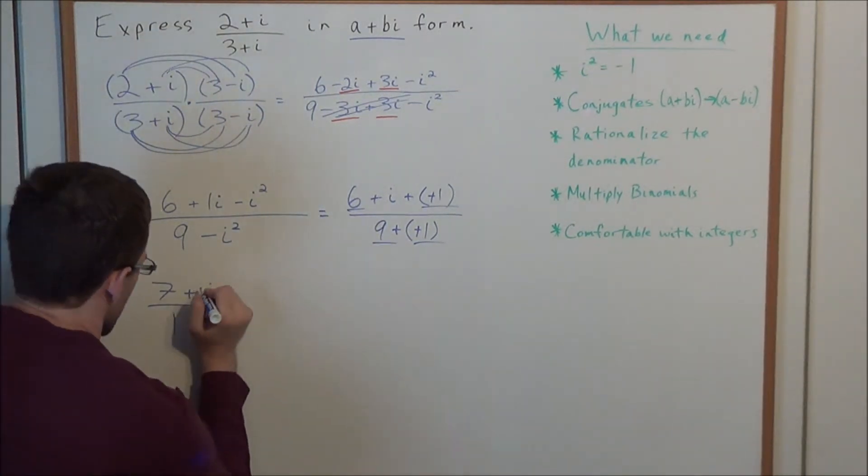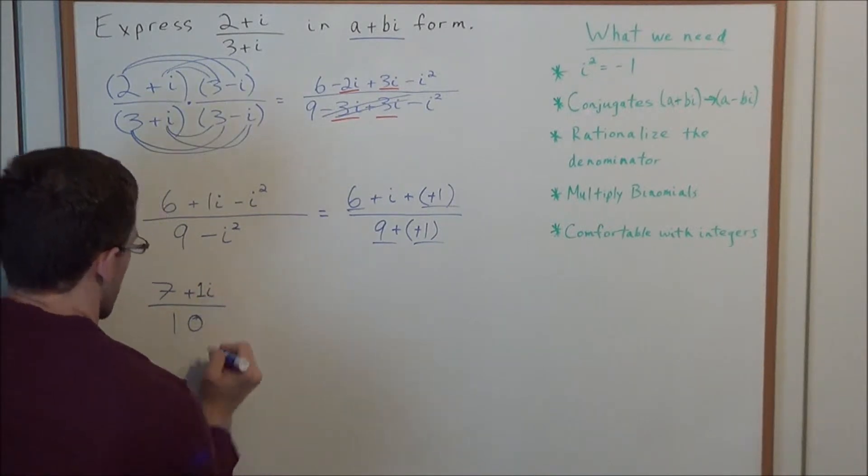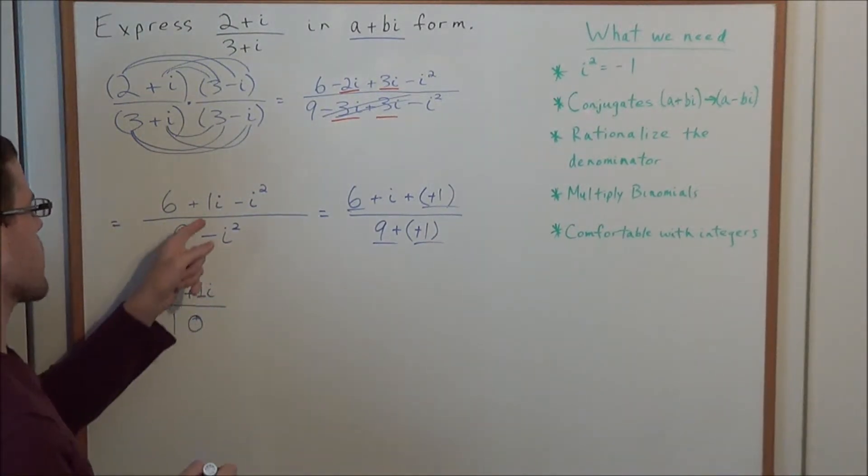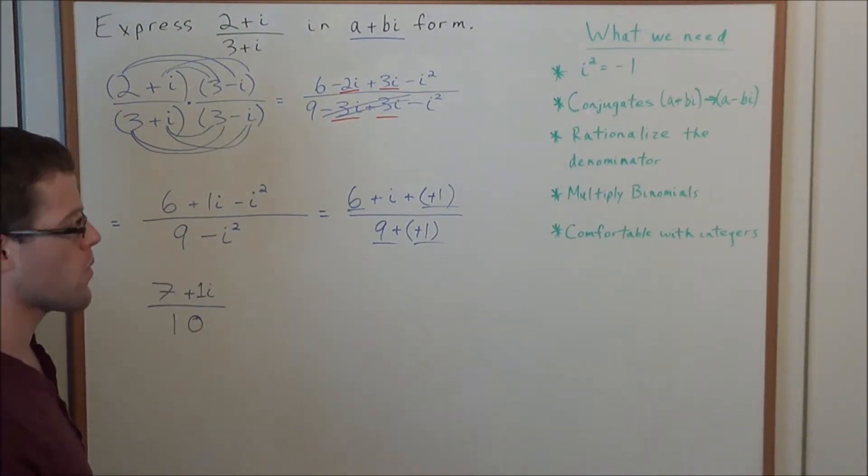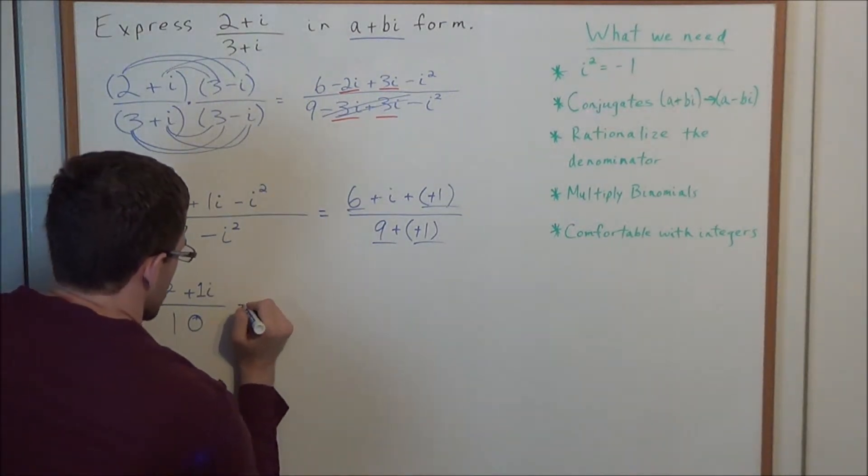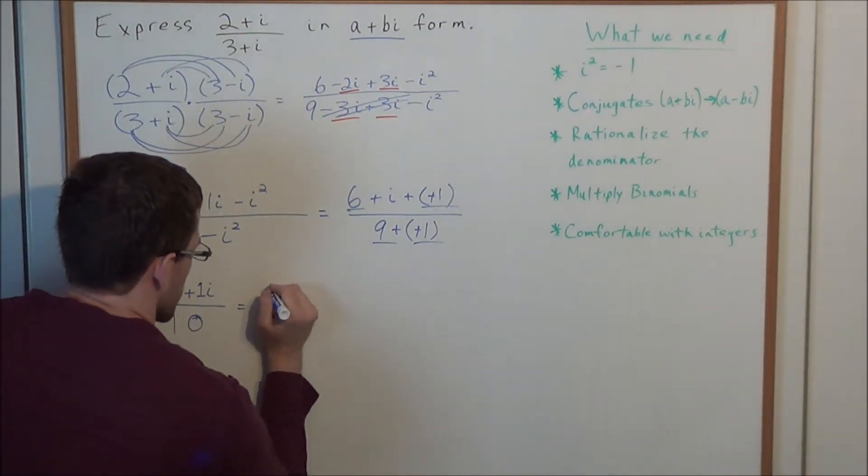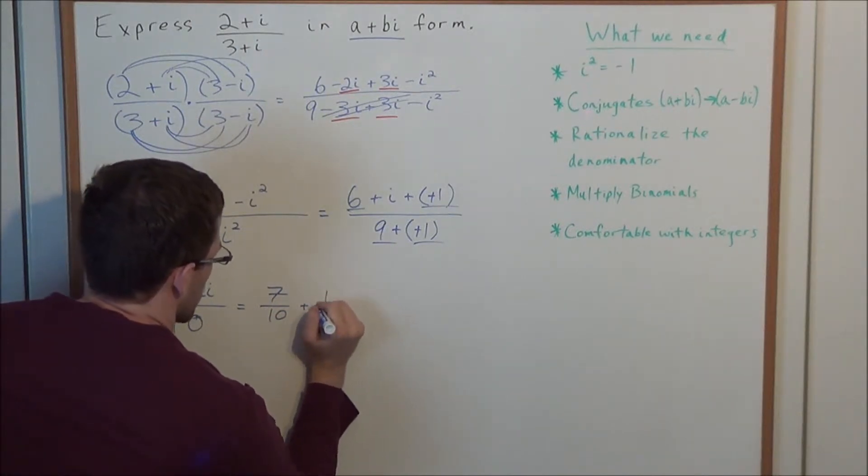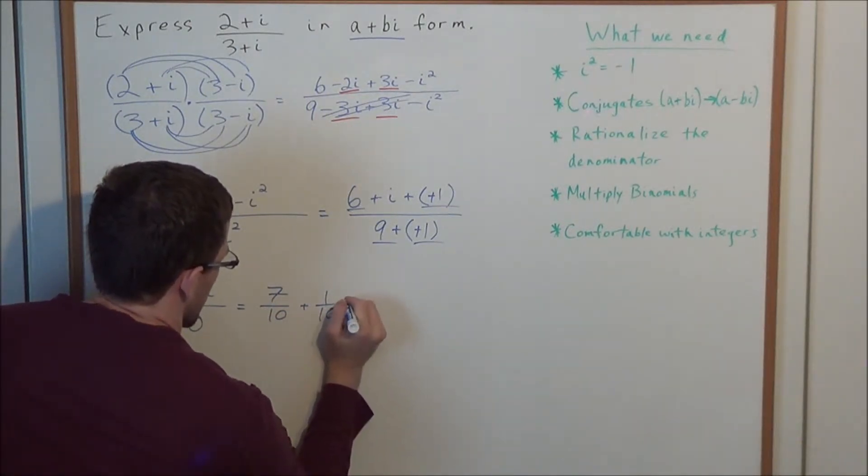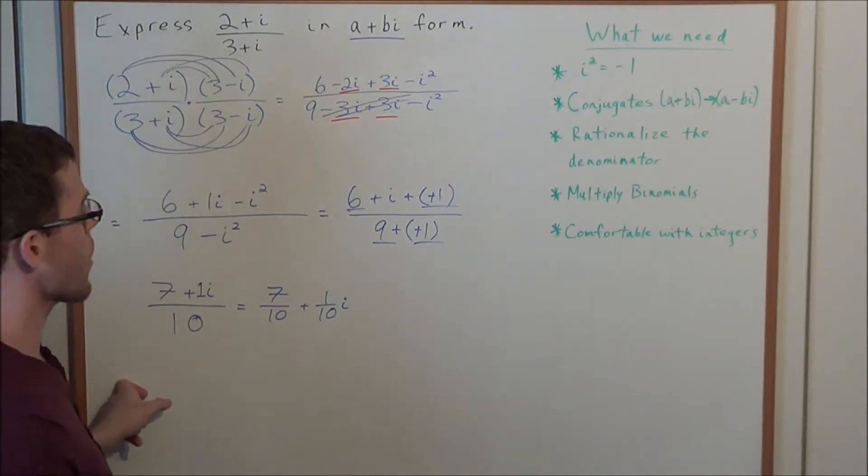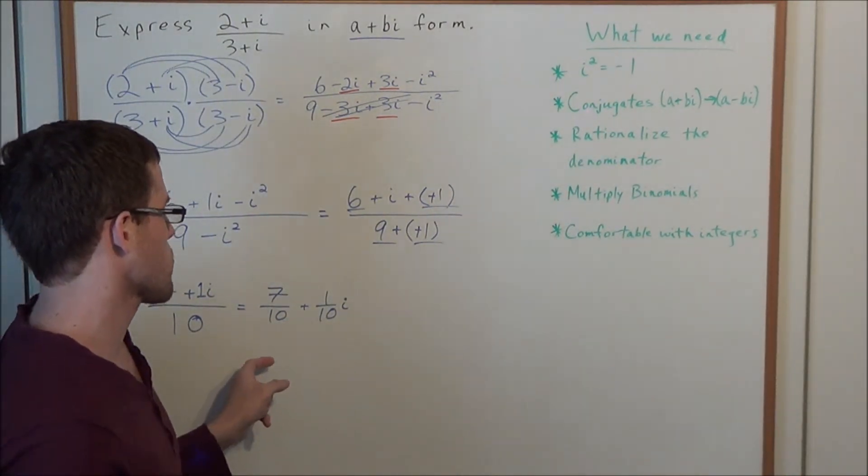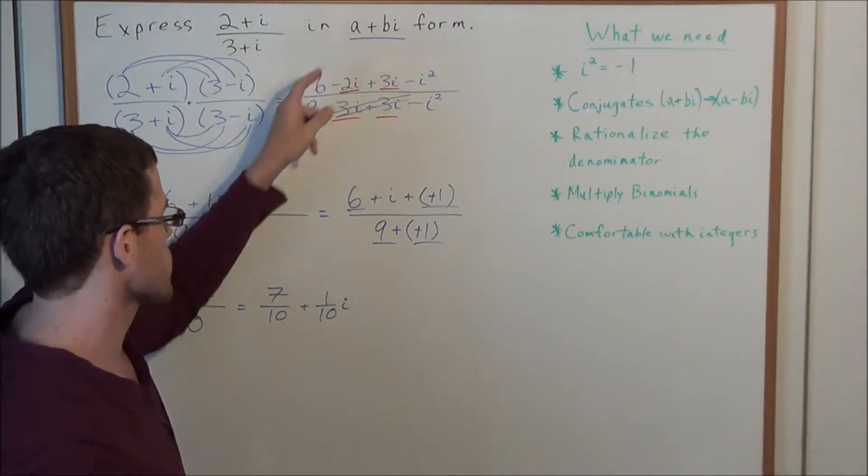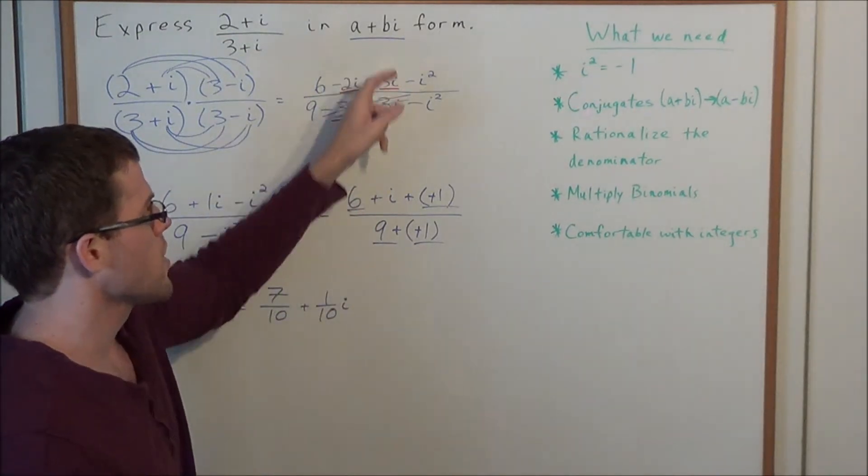But in order to do so, let's go ahead and think of this as 1i. We'll put the one back that we took away from before. So now we could write 7 over 10 plus 1 over 10 times i. And now our answer is in a plus bi form. We have a equals 7 over 10, and b equals 1 over 10.